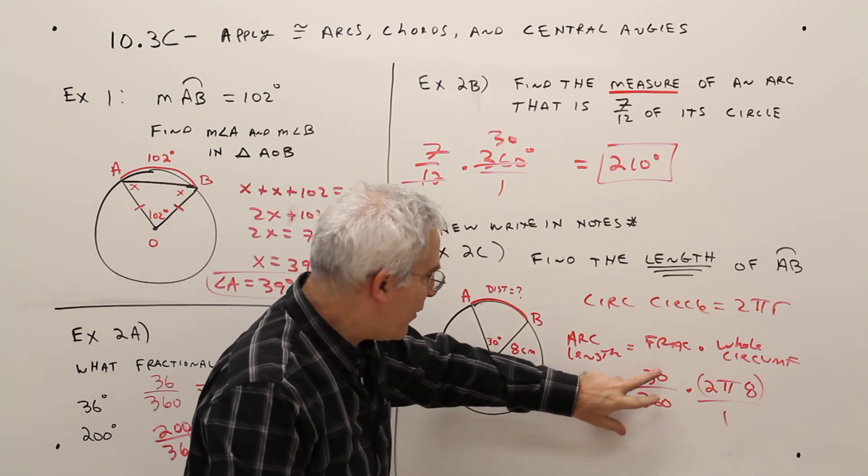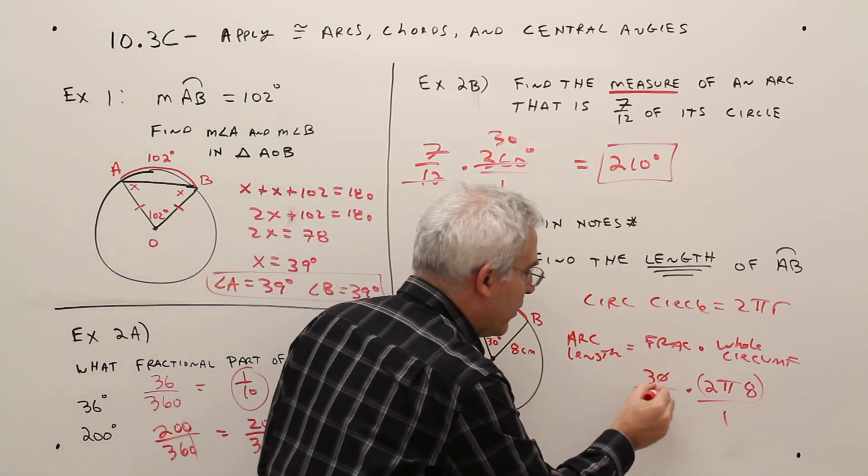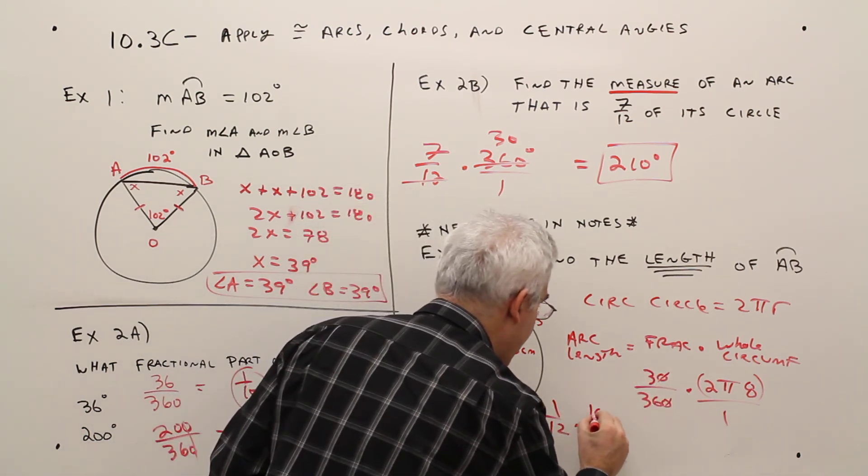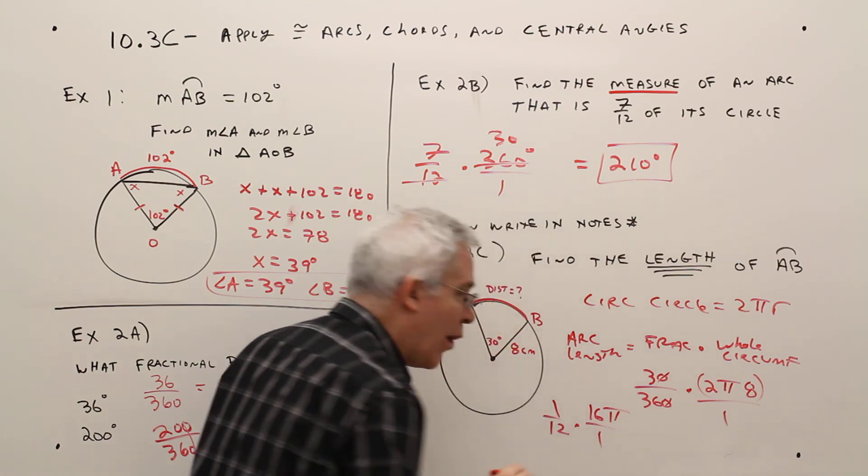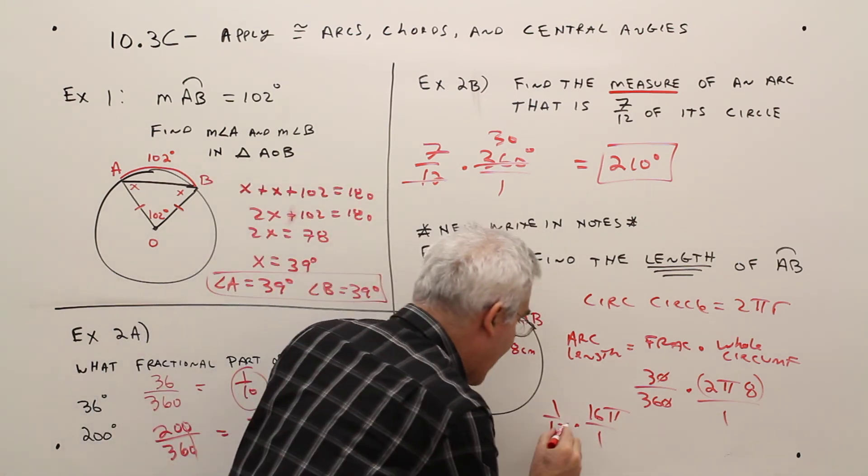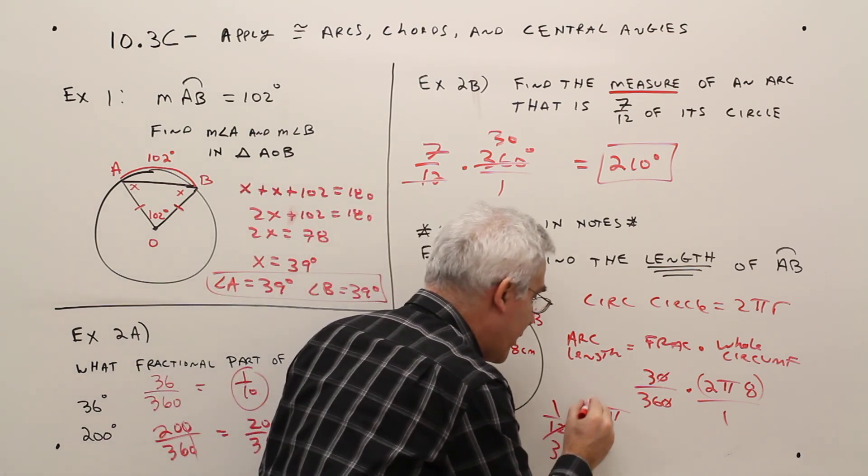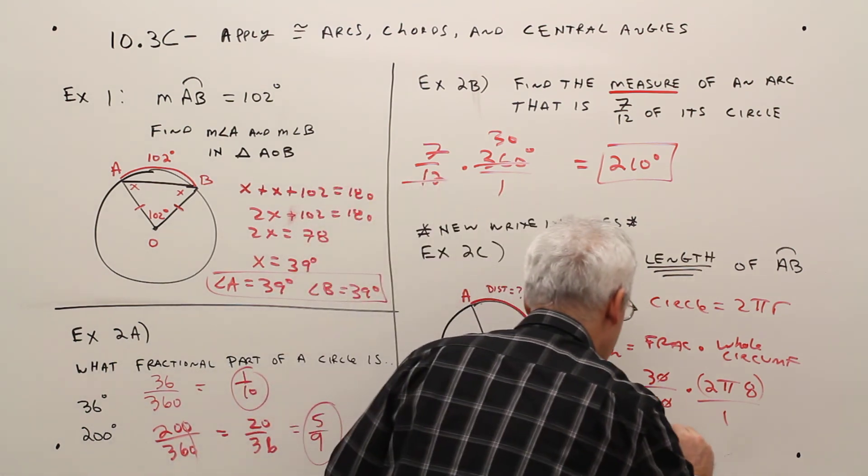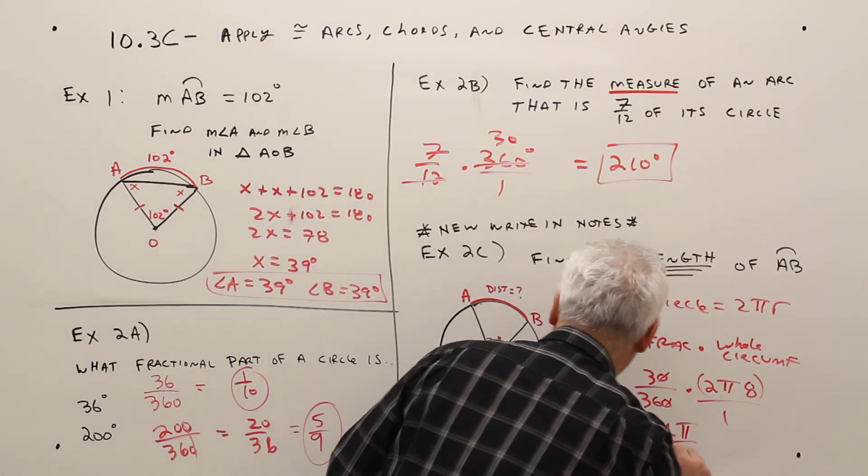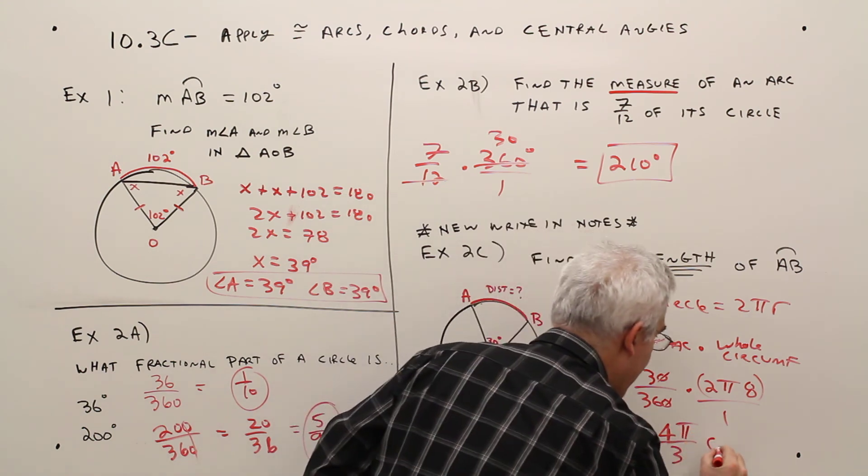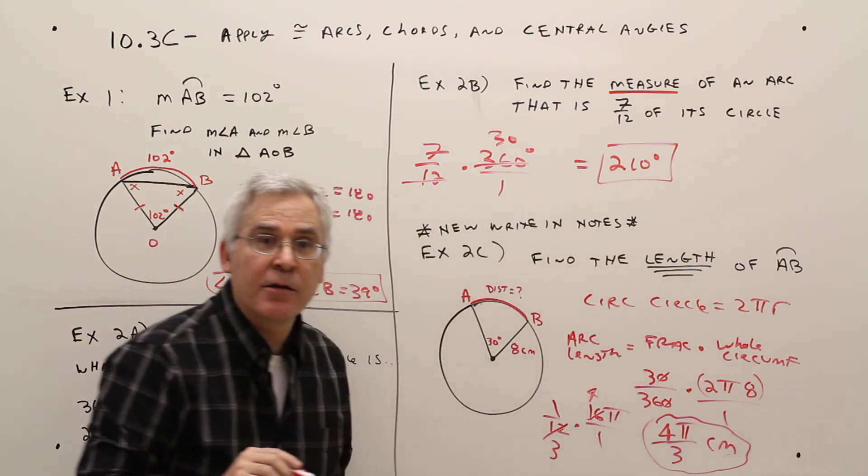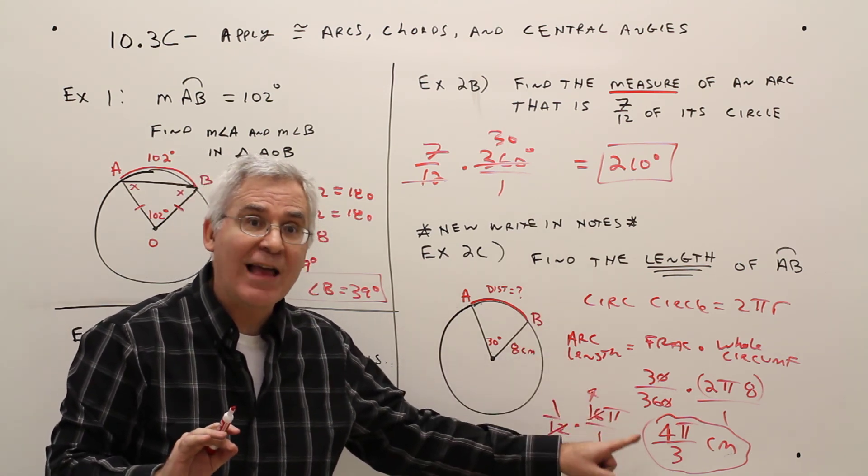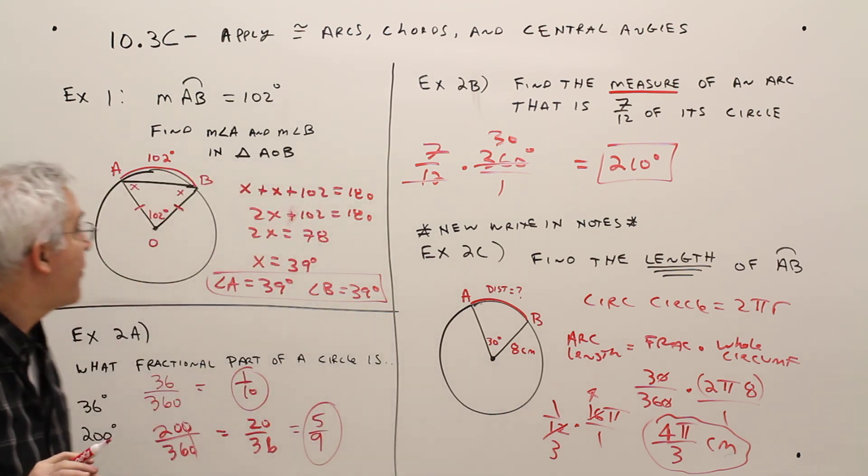So let me reduce. The zeros cancel. 3 over 3. That's going to be 1 over 12 times 16 pi over 1. 4 goes into 12 three times. 4 goes into 16 four times. So my final answer will be 4 pi over 3. 4 pi over 3 centimeters. Again, unless otherwise specified, always report exact simplified answers. So there you have it.